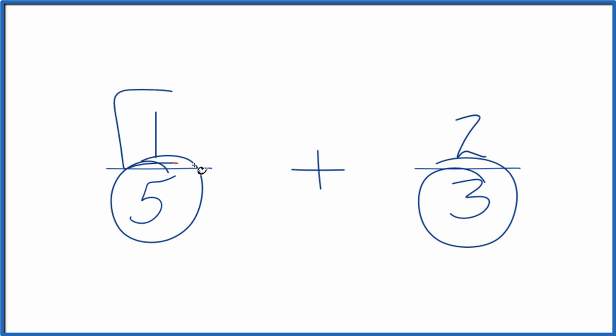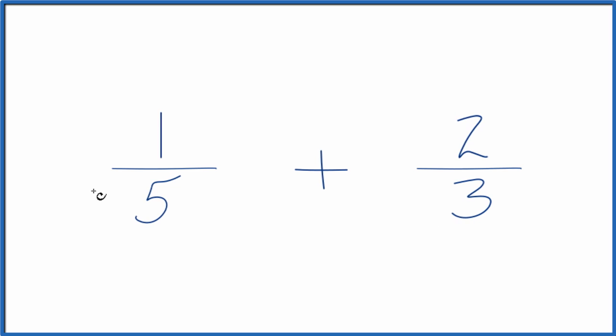Once we do that, we can just add the numerators together and we'll have the sum for one-fifth plus two-thirds. Probably the easiest way is to take 5 and multiply that times 3. That'll give us 15.